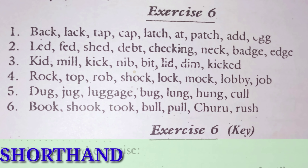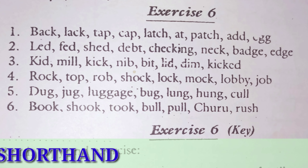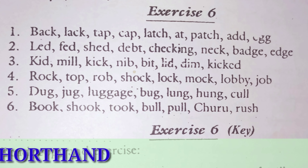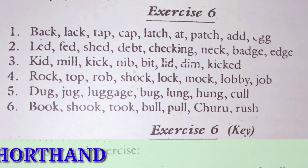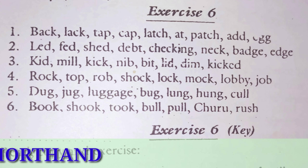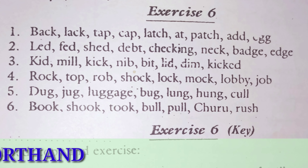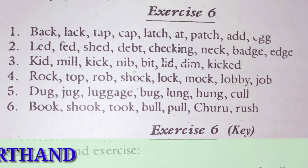Row 5: Dog. Jug. Luggage. Bug. Lung. Hung. Kal.